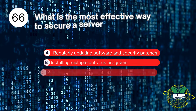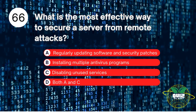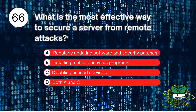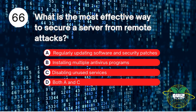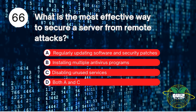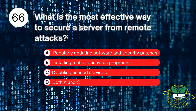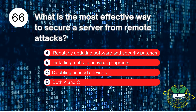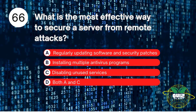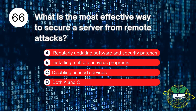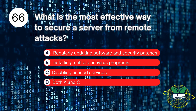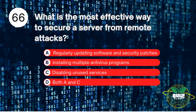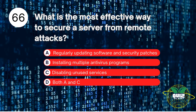Number 66. What is the most effective way to secure a server from remote attacks? A. Regularly updating software and security patches. B. Installing multiple antivirus programs. C. Disabling unused services. D. Both A and C. The answer is D. Both A and C.